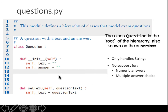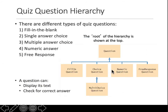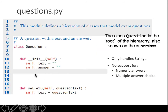The text and answer are both strings. In the parent class there is no support for numeric answers or multiple choice — those are not available at this level. The key point is that all questions have a text field, so rather than repeating that in each subclass, we declare it once in the parent class. The method for setting text is written once and all child classes can use it.